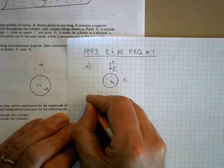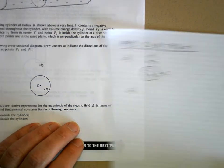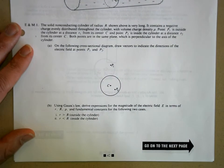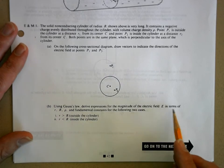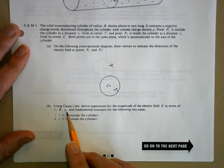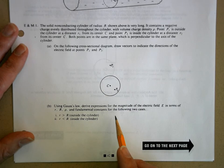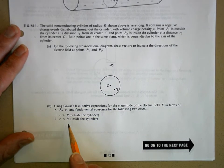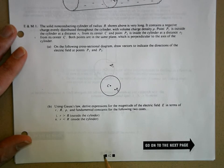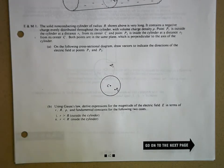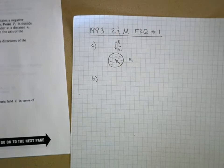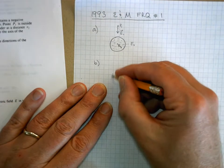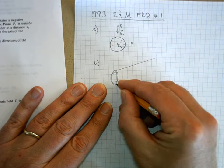Okay, part B. It says, let's go back to the paper here. It says, use Gauss's law, or using Gauss's law, derive expressions for the magnitude of the electric field E in terms of R, capital R, ρ, and the fundamental constants for the following two cases. When you're outside the cylinder and when you're inside the cylinder. Now, I really hope you got this one. This is a basic problem. This is like, you know, we did this in lecture, and it was one of the example problems that we did.